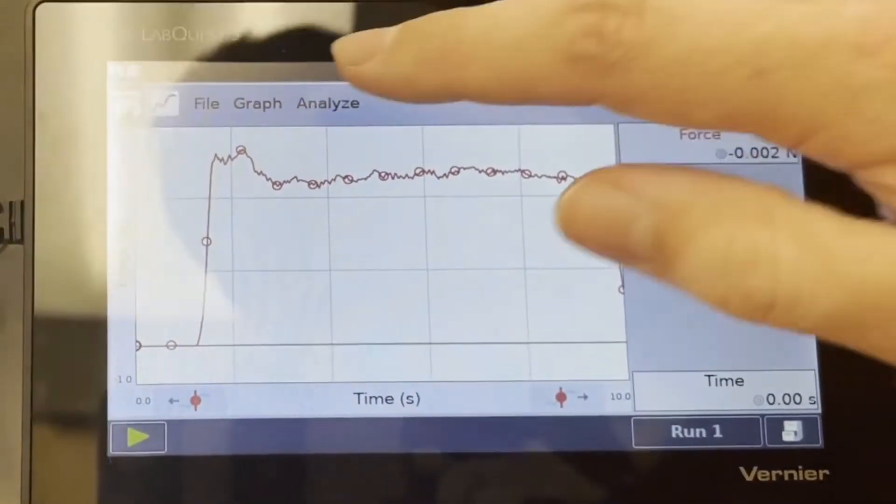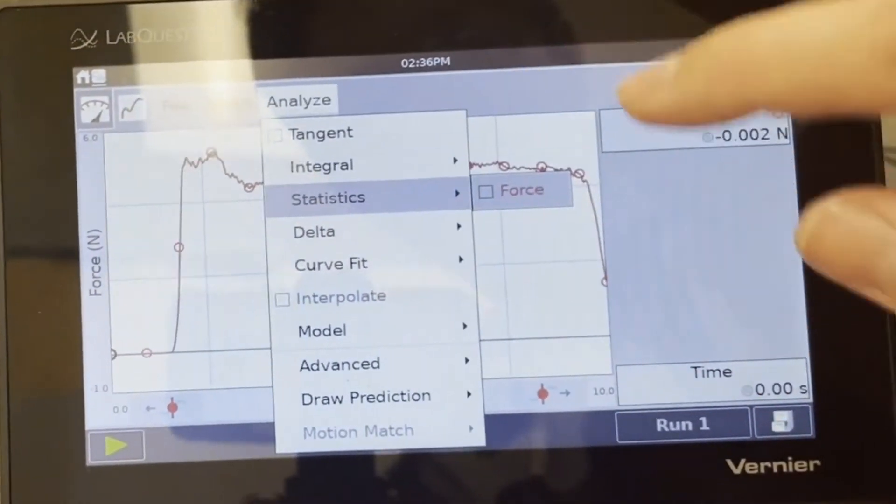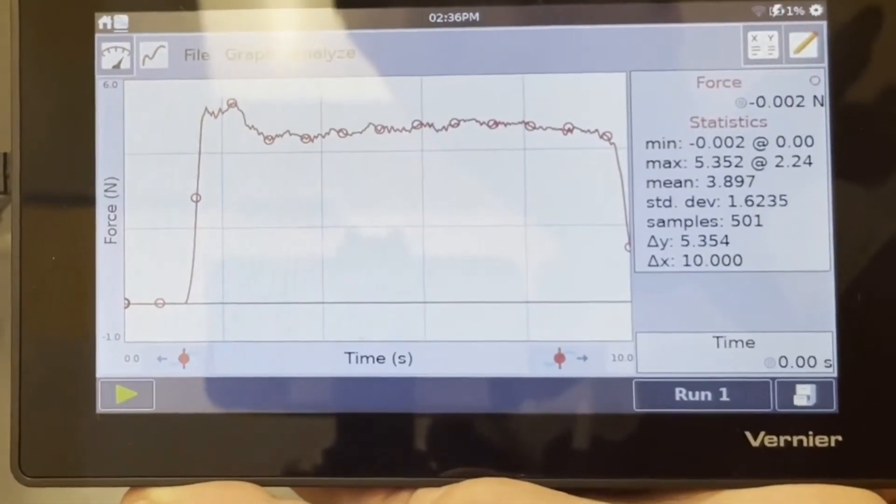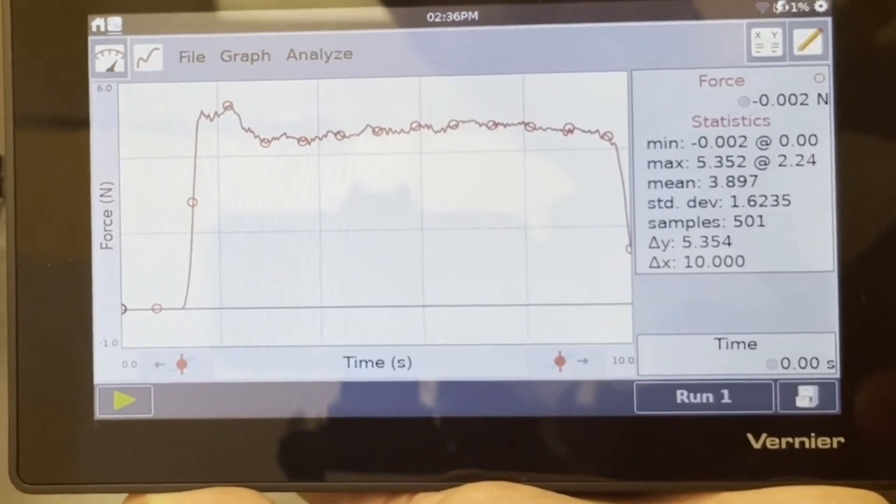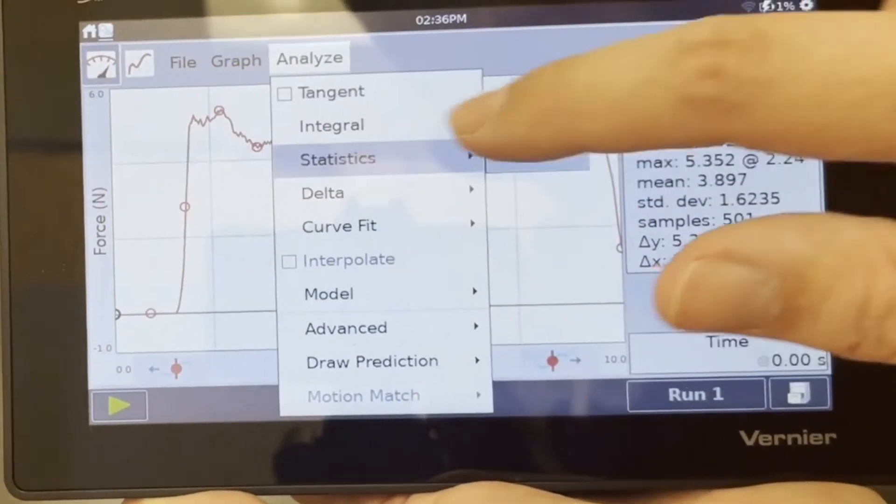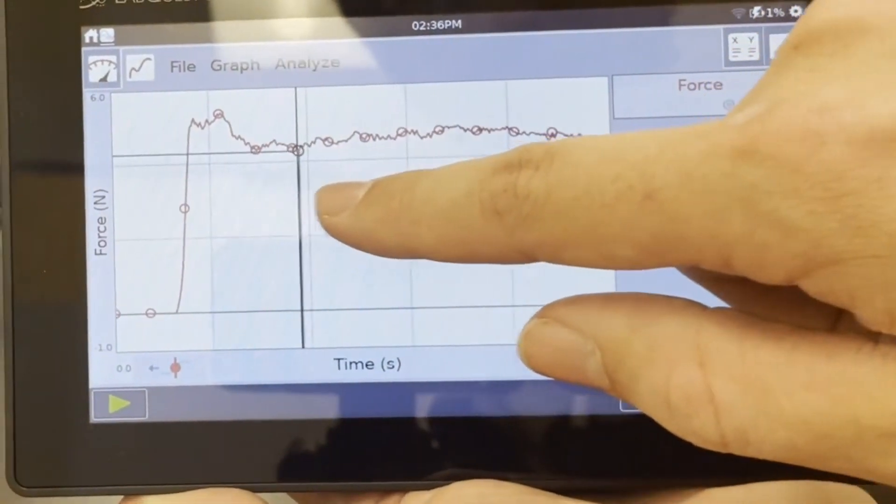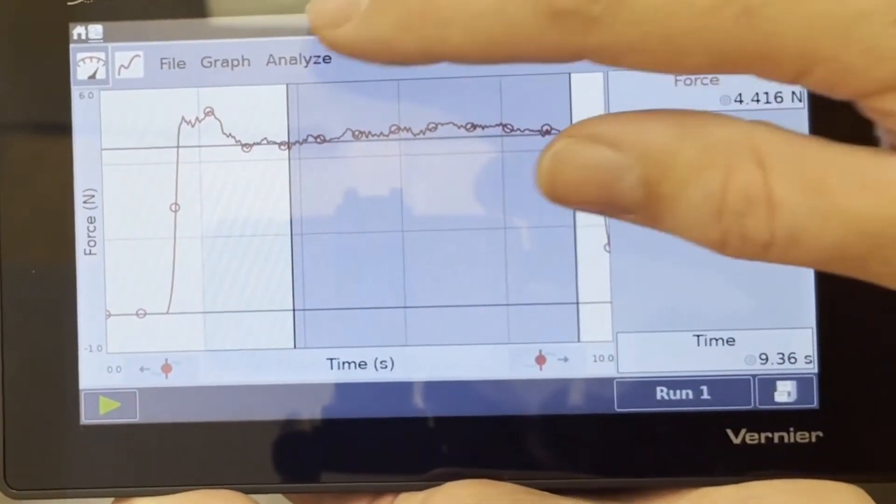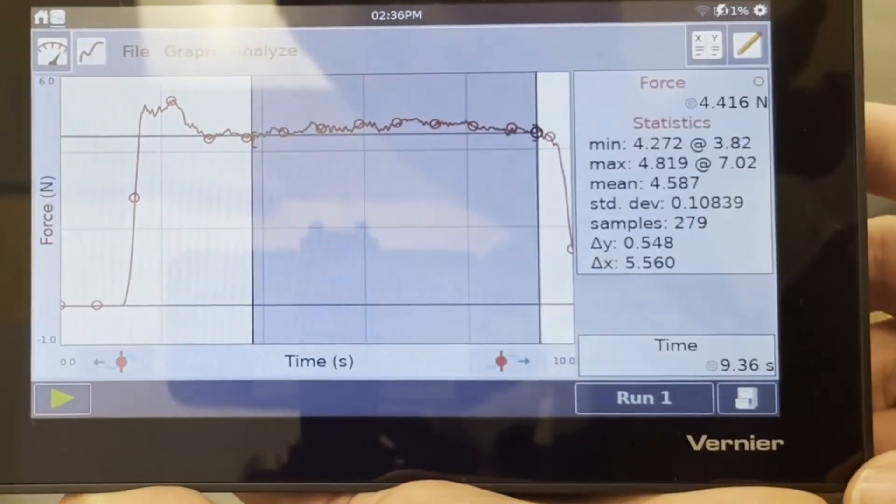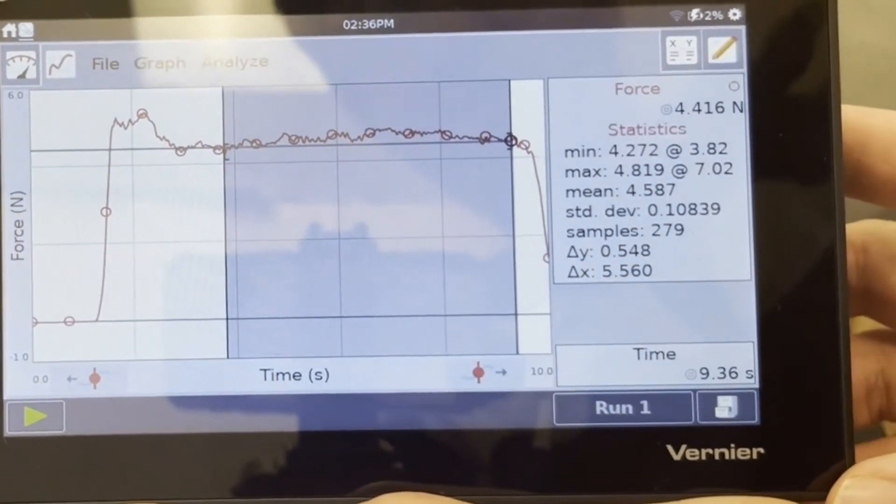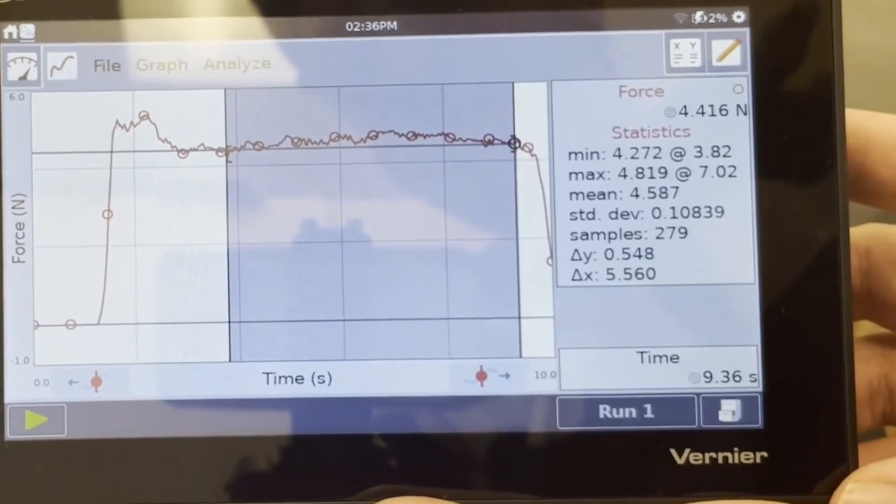Alright, analyze. We have a maximum value for static friction at 5.352 newtons. And when we analyze the average kinetic friction, we have a force of 4.587 newtons.